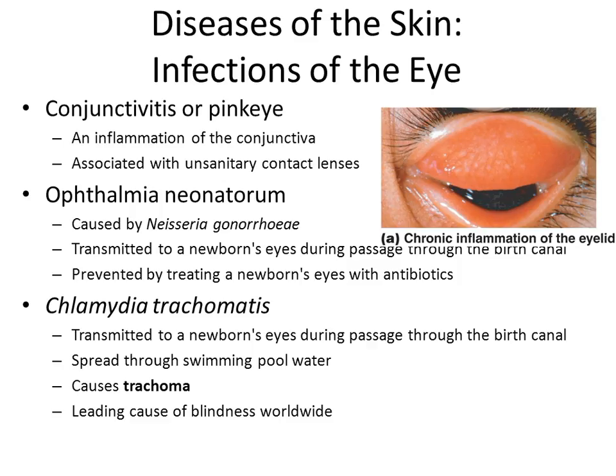One is ophthalmia neonatorum, caused by Neisseria gonorrhoeae. That's gonorrhea in your eye. Most often it's seen in babies — their mother had gonorrhea, and as the baby was coming into the world, the baby got gonorrhea in their eye.